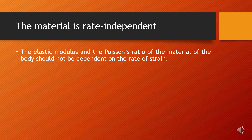The next assumption is that the material is rate independent. We assume that the stress-strain curve of the material is independent of the rate at which the material deforms — that is, how fast the strain is varying with respect to time. We assume that the material stress-strain curve is independent of that rate.